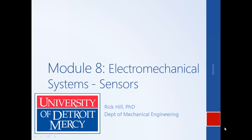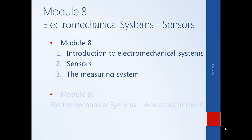In this module, we will begin to discuss electromechanical systems, in particular sensors. So far in this course, we've modeled electrical systems and mechanical systems. In this module, we will begin to discuss systems that have aspects of both. We will first begin with sensors, and in a subsequent module, we will talk about electromechanical actuators. We will also talk about how the sensor fits into the larger measuring system, and how the aspects of the measuring system affect the analysis and design of control systems in general.